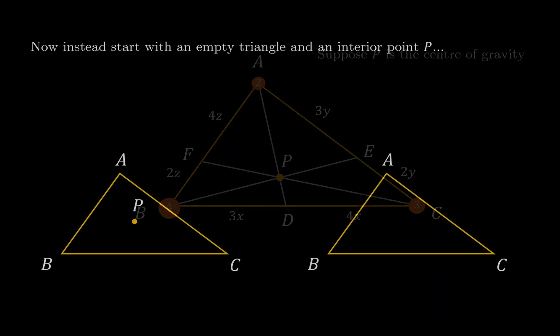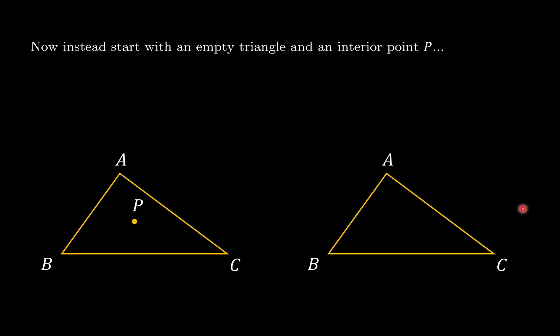I wanted to talk a bit about the converse. It's quite important for us to be able to replicate center of gravity. What I mean by this is, suppose we start now with an empty triangle and a given interior point P. Can I find weights to hang off A, B and C such that the center of gravity is at P? Fortunately, we have already done most of the hard work.